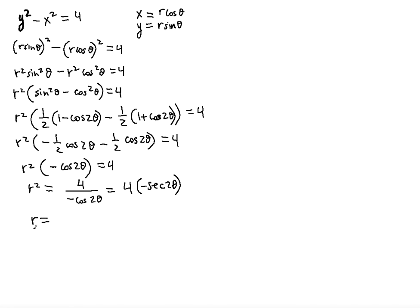Taking the square root on both sides gives plus or minus — and the square root of 4 is 2, so you get r equals plus or minus 2 times the square root of negative secant 2 theta. You might wonder about the negative sign inside the square root, but it can still be positive depending on the angle theta.